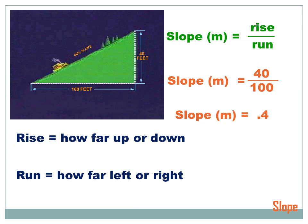This is math, so we have to find a number to represent slope. The formula is: slope equals rise over run — the amount it goes up and down over how much it goes left and right. This hill has a rise of 40 feet over a run of 100 feet, so slope equals 40 over 100. We use the symbol m to represent slope, so m equals 40 over 100, and 40 divided by 100 gives us 0.4.